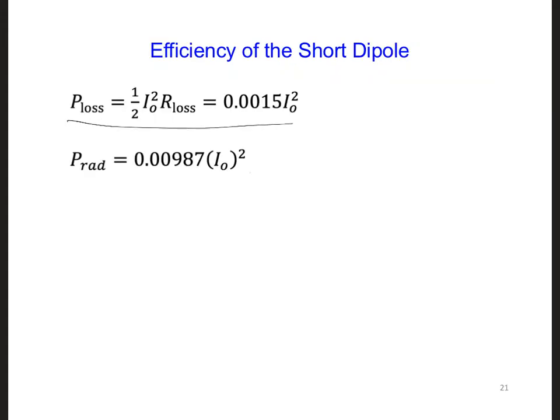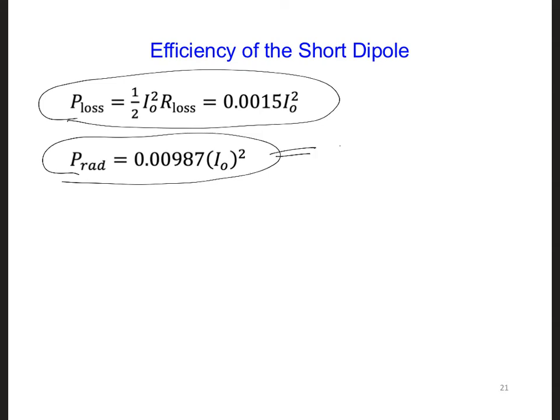Using this P loss result that we just calculated, along with our earlier calculation for the radiated power, which we calculated by looking at the power through the surface of a sphere around the antenna, now we can use this to calculate the equivalent R radiated. And using the same equation here, it's just you plug in radiated instead of loss, we're going to get 0.02 ohms.